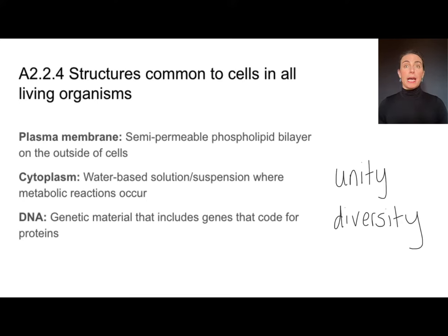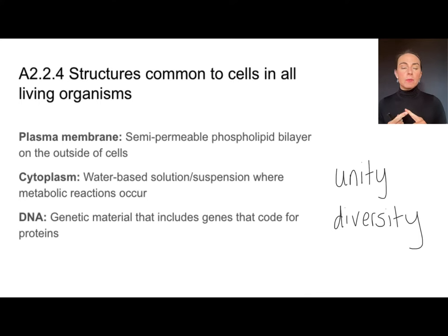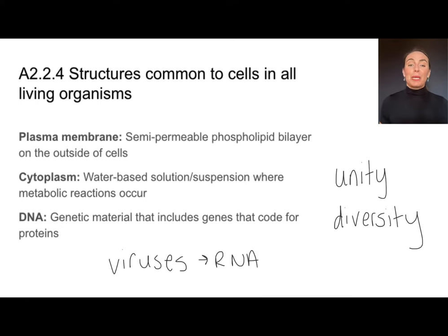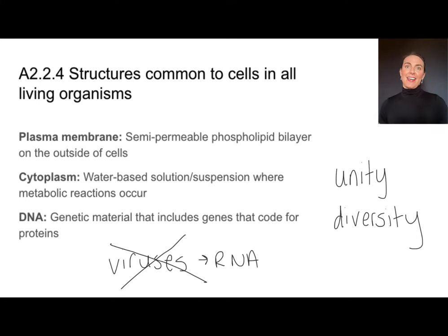All cells are going to have a plasma membrane around the outside — it's a semi-permeable layer made out of phospholipids. All cells include cytoplasm, a watery-based solution where all metabolic reactions occur. All organisms have DNA as their genetic material. Viruses can sometimes use RNA as their genetic material, but viruses are not considered to be living things, so we can safely say that all living organisms use DNA as their genetic material.